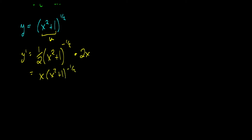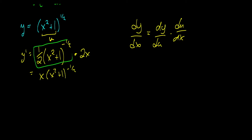And that is the chain rule. In Leibniz notation, dy/dx is equal to the derivative of y with respect to u multiplied by the derivative of u with respect to x. You can see how this is happening here — this section is our dy/du, and this section is our du/dx. The derivative of u, which is x squared plus 1, with respect to x is 2x.